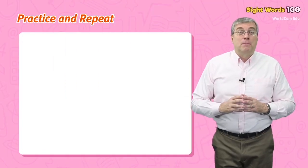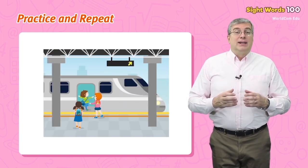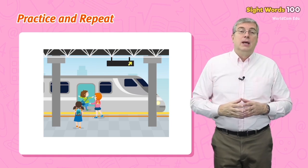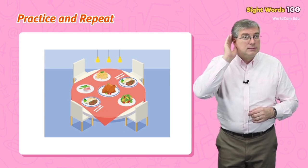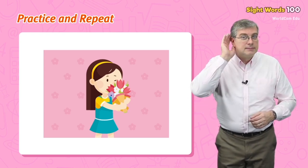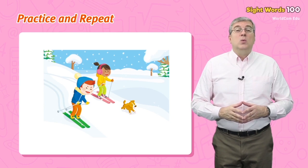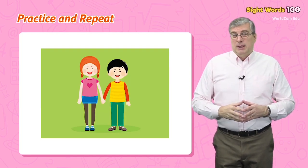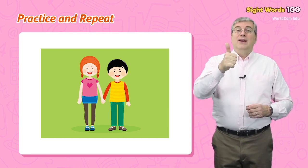Now it's time for practice and repeat. Repeat after me: train — we get on the train. Round — we have a round table. Smell — the flowers smell sweet. Winter — we go skiing in winter. Became — we became friends. Good job everybody!